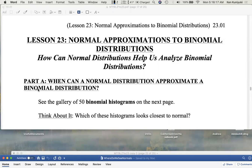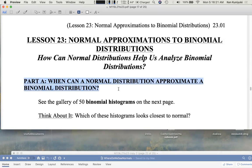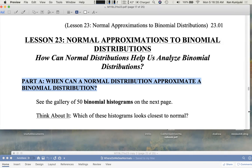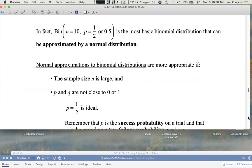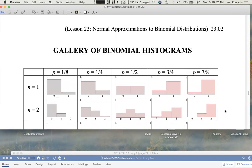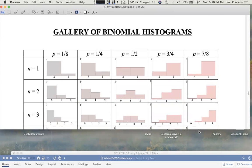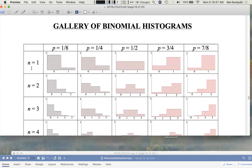So first of all, when can a normal distribution approximate a binomial? We're going to look at a gallery of 50 binomial histograms and observe which of the histograms looks closest to normal. So here's the first part of the gallery. For example, let's review binomial experiments.